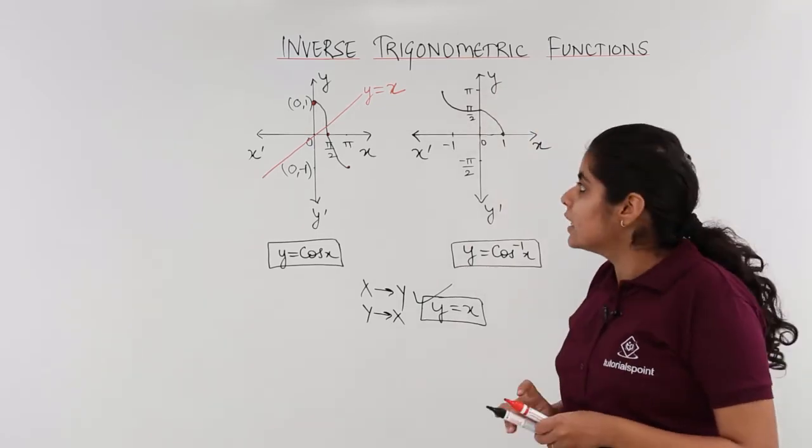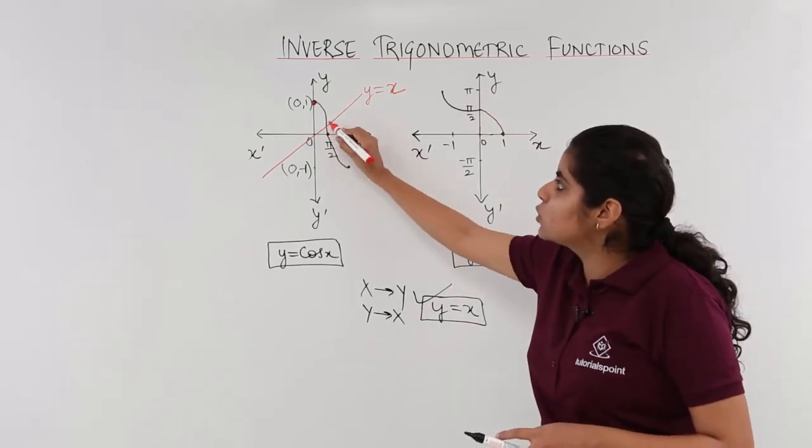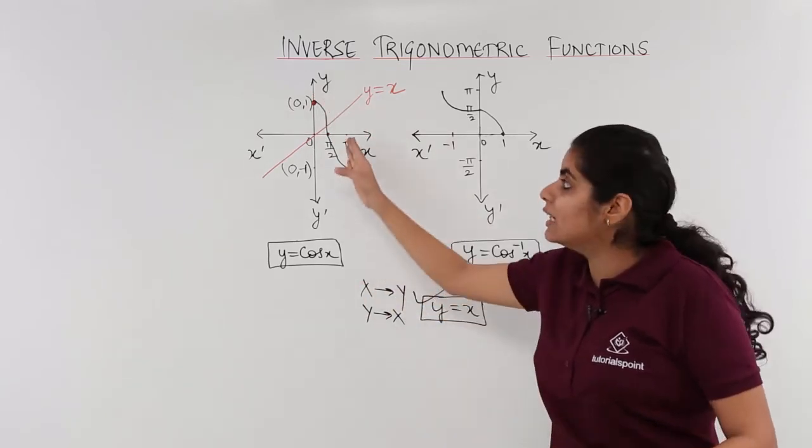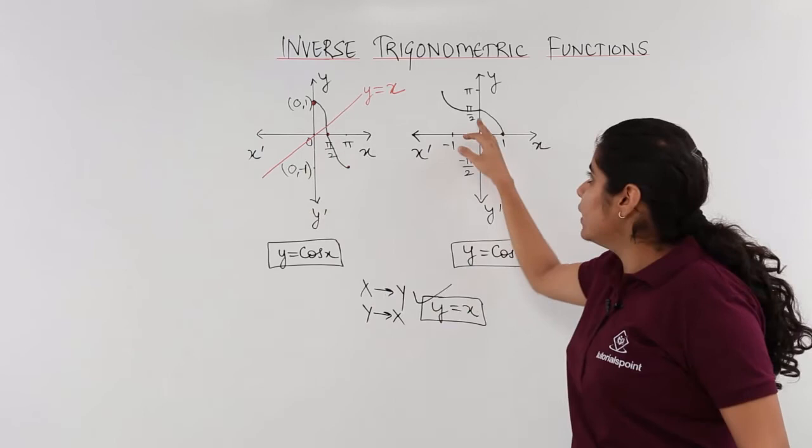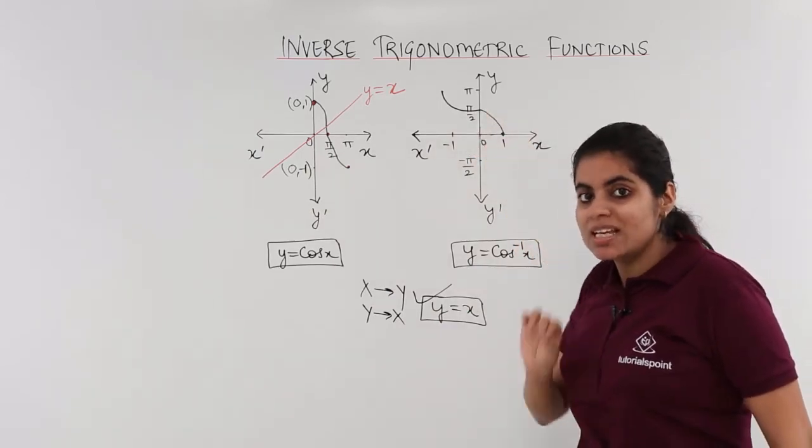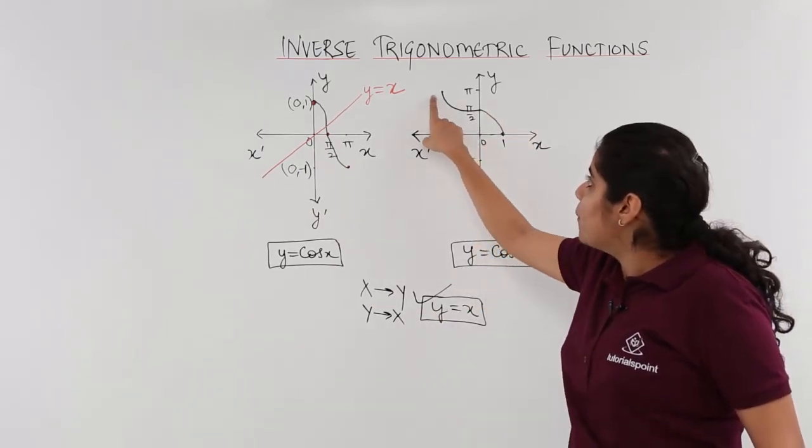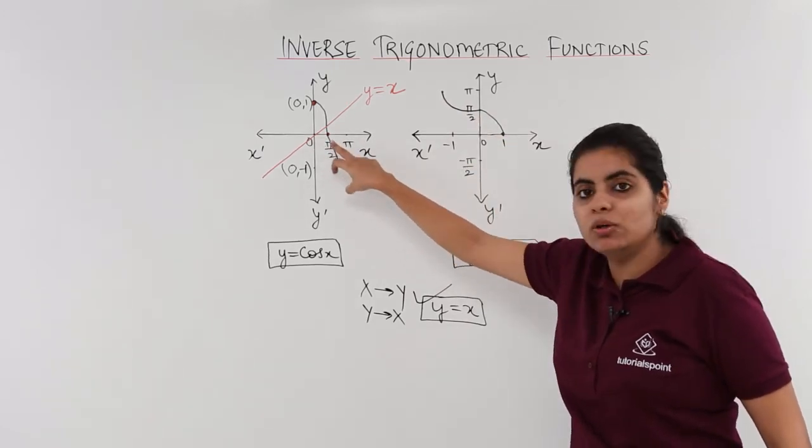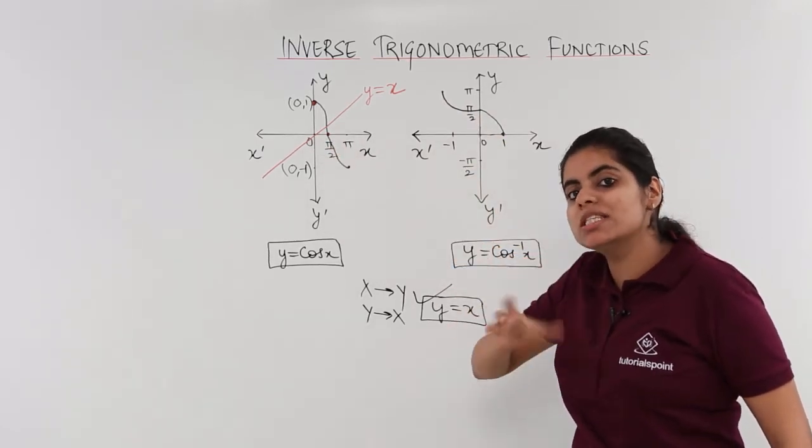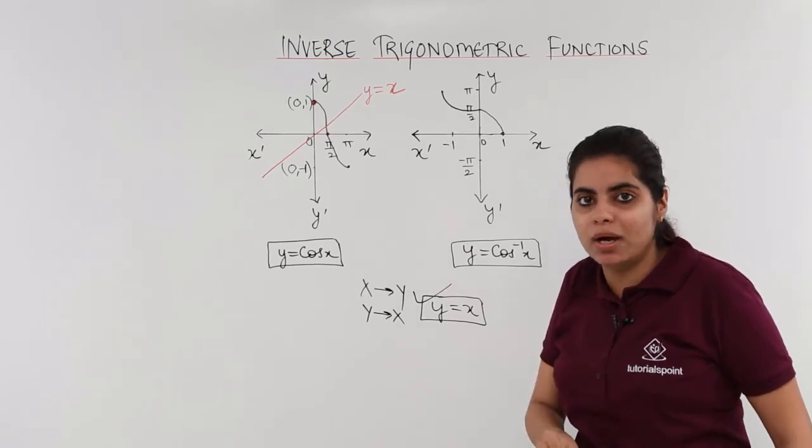Why we are doing this? It is very simple that pi by 2 to 1 was drawn earlier in the domain part and now it becomes the range part. Similarly, minus 1 to pi was drawn here. We are just interchanging x-axis and y-axis.